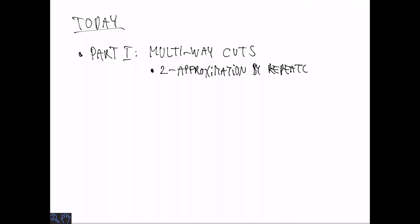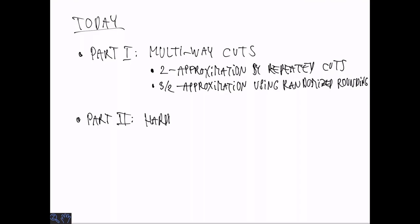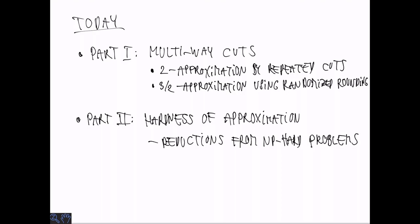Today we have two independent parts. First, I am going to talk about multi-way cuts. We are going to see a 2-approximation by repeated cuts and a 3-halves approximation using randomized rounding. In the second part, we are going to look at hardness of approximation results.